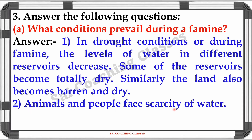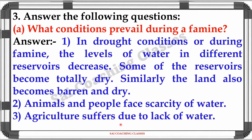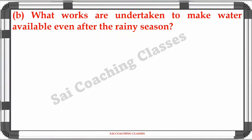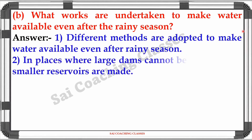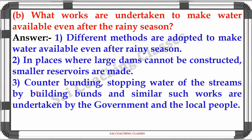Animals and people face scarcity of water. Agriculture suffers due to lack of water. Question 5: What works are undertaken to make water available even after the rainy season? Answer: Different methods are adopted to make water available even after the rainy season. In places where large dams cannot be constructed, smaller reservoirs are made. Stopping water of streams by building bunds, and similar such works are undertaken by the government and local people.